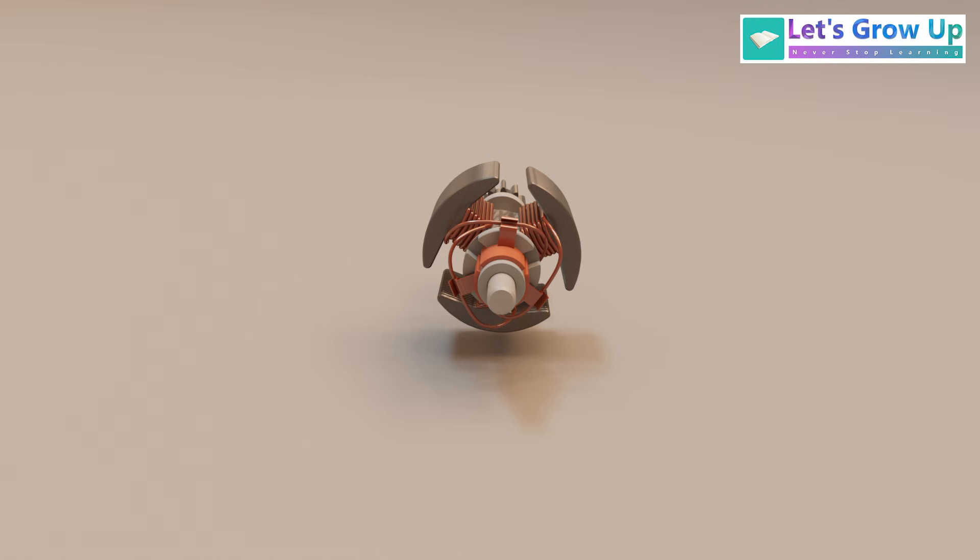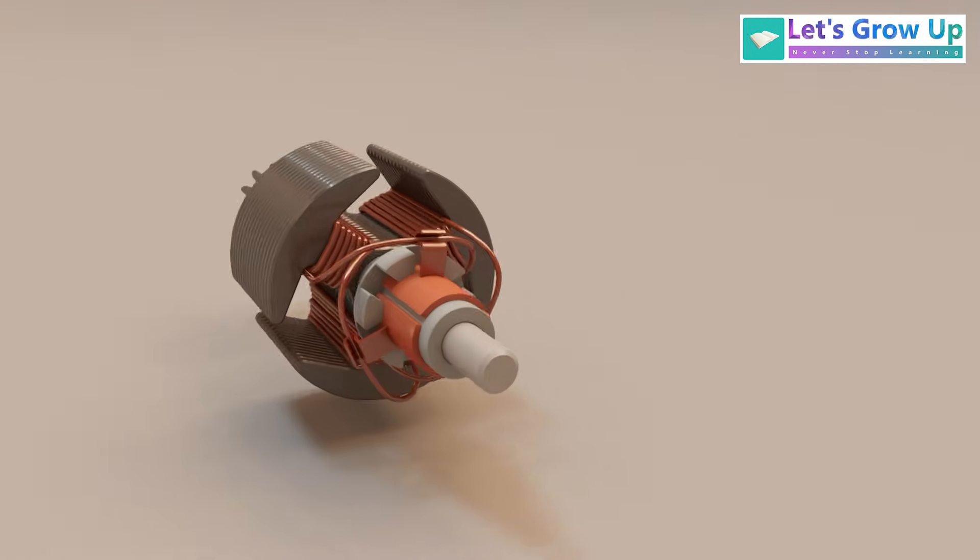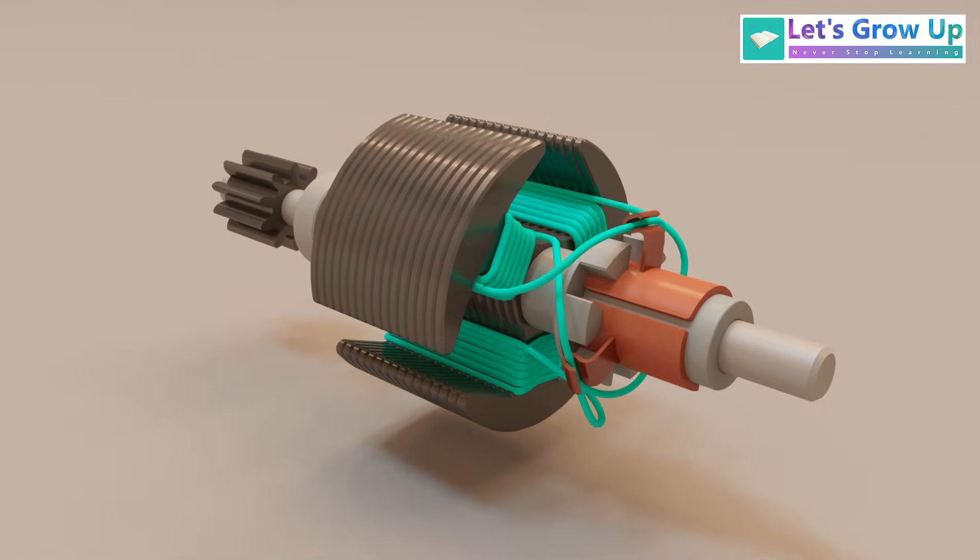This is an armature. When we see the rotor with winding, it is called the armature.